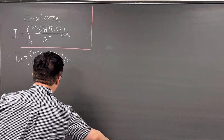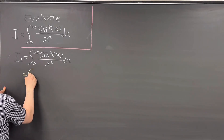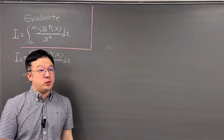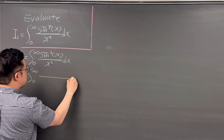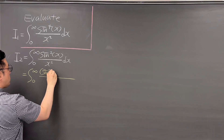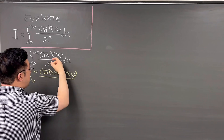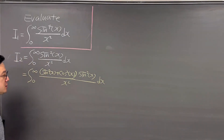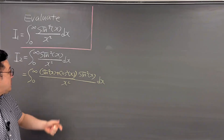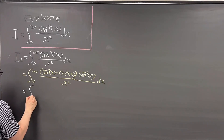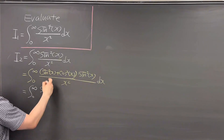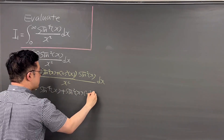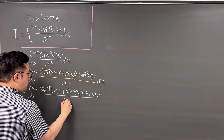So let me rewrite this integral I2 as the integral from 0 to infinity. Since sine squared x is 1 times sine squared x, and sine squared x plus cosine squared x equals 1, I multiply by that. So the integral has to be the same as the parenthesis (sine squared x plus cosine squared x) times sine squared x over x squared dx, so that we can distribute sine squared x to those two terms inside the parenthesis. Then the integral looks like the integral from 0 to infinity of sine to the power of 4x plus sine squared x times cosine squared x, all over x squared dx.